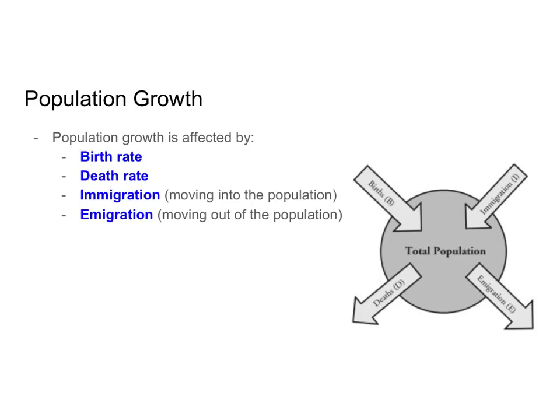There are several different factors that affect the size of a population and they are birth rate, death rate, immigration, and emigration. The birth rate is obviously the rate at which individuals are being born in a population. The death rate is the rate at which individuals are dying in a population. Immigration is when individuals move into a population and emigration is when individuals leave or move away from a population.